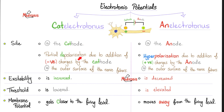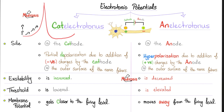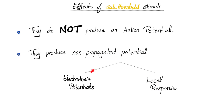In catelectrotonus, you are becoming more positive, moving closer to the firing level — threshold is lowered, excitability increases. Anelectrotonus is the exact opposite: the anode is positive, it attracts negative charges, the inside surface becomes more negative (hyperpolarized), excitability decreases, threshold is higher, and the membrane moves away from the firing level.